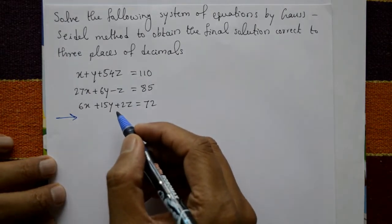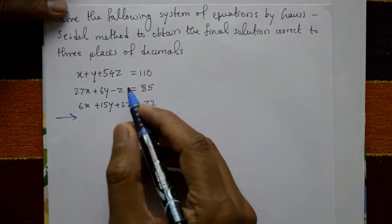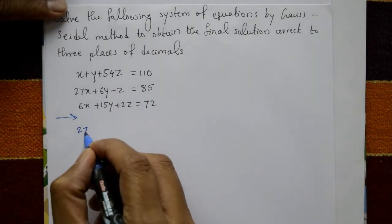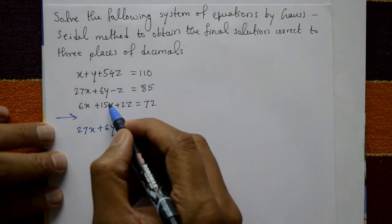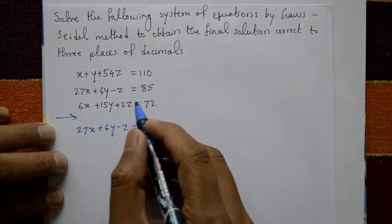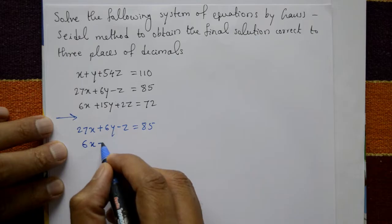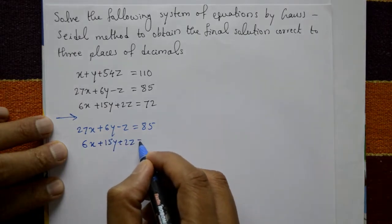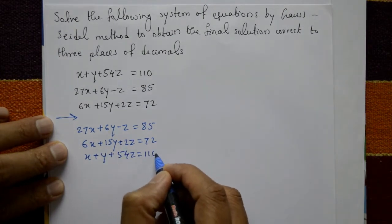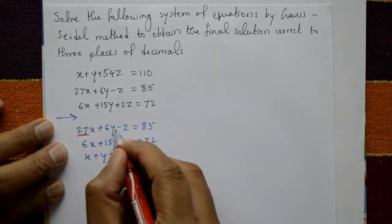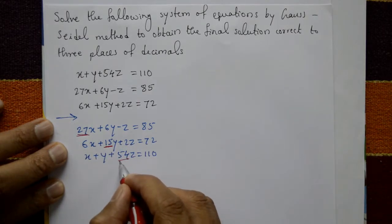First, rearrange the equations. The first equation should have x coefficient greater than y and z coefficients, so: 27x + 6y − z = 85. The second equation has y coefficient greater than x and z: 6x + 15y + 2z = 72. The third equation: x + y + 54z = 110. The coefficient of x is greatest in the first, y in the second, and z in the third.